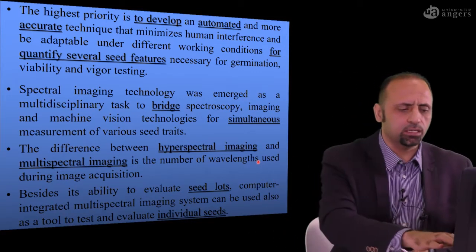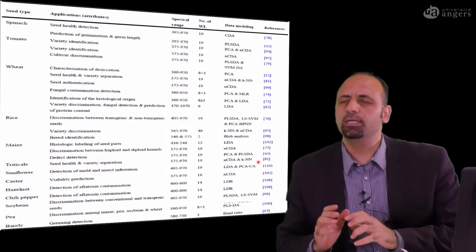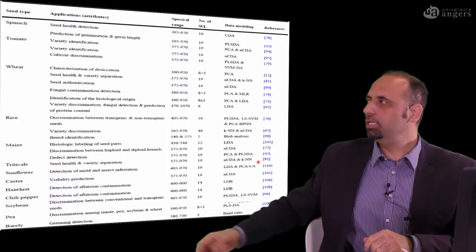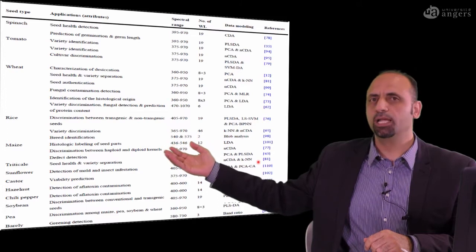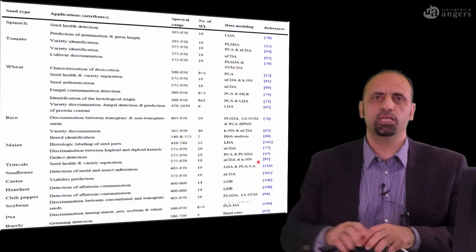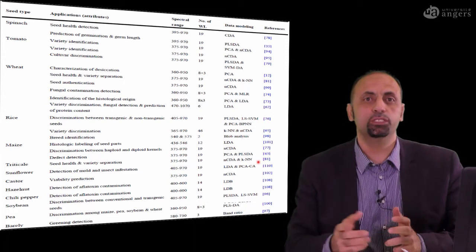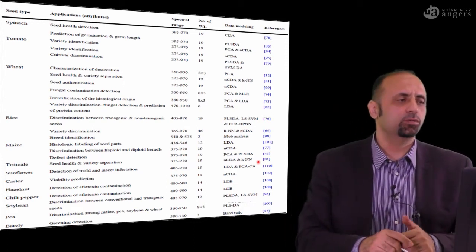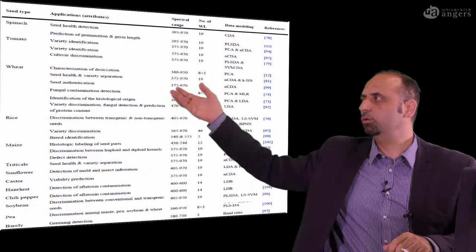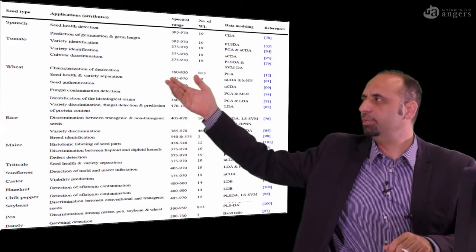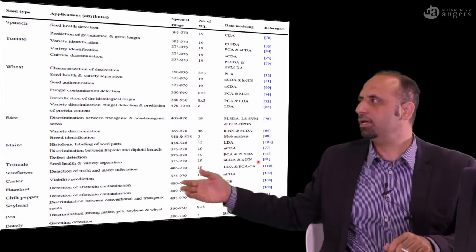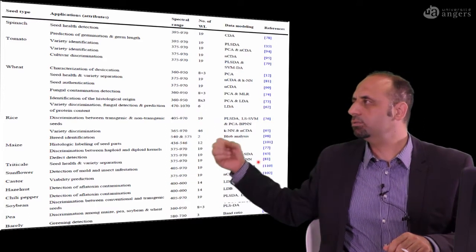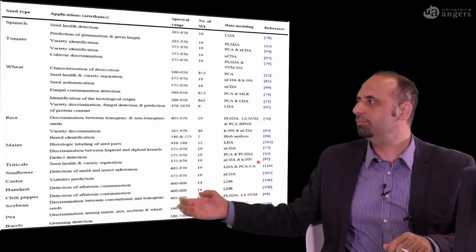We are going to use here what is called illumination-based system. We carried out the literature review about using this technology, multispectral imaging, for quality evaluation of different sorts of seeds. It is already successfully implemented for quality evaluation of seeds of spinach, tomato, wheat, rice, castor, chili, peas, a lot.